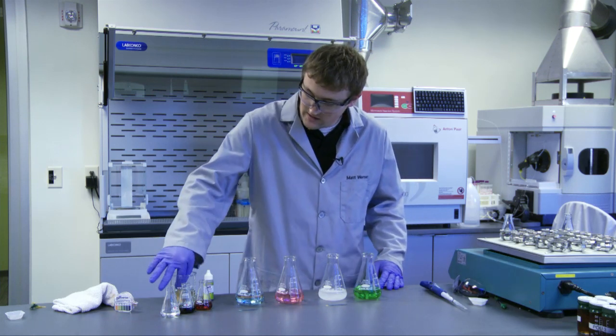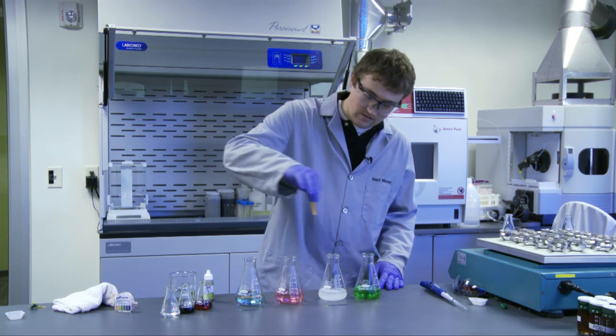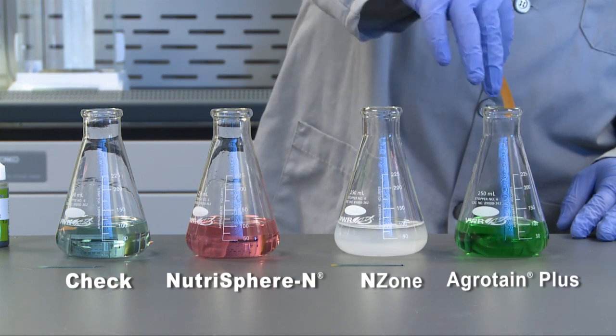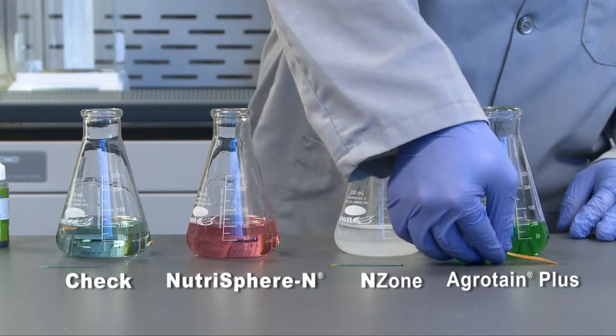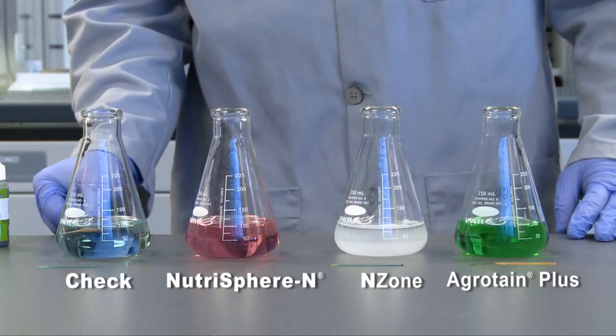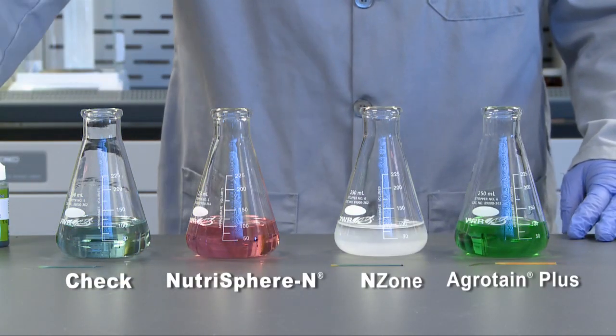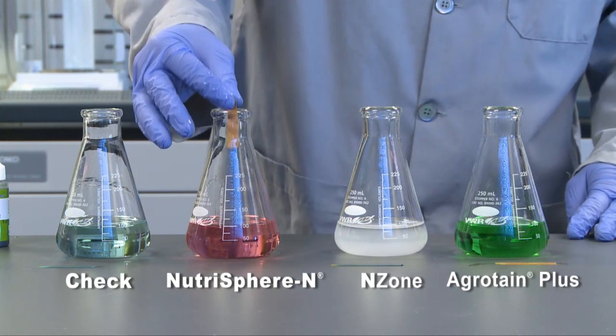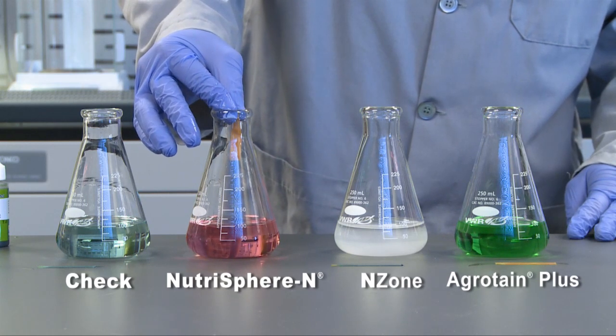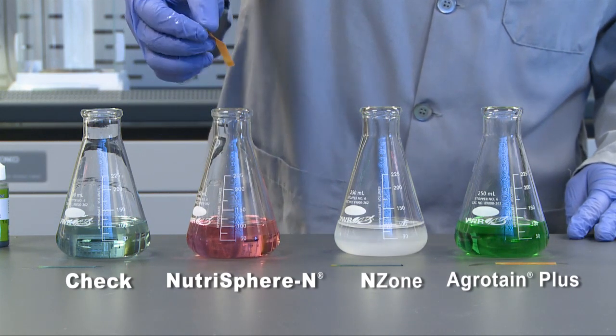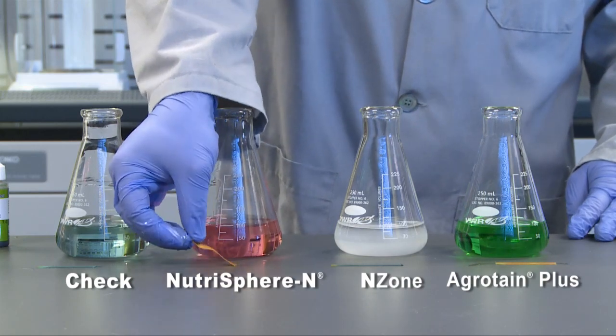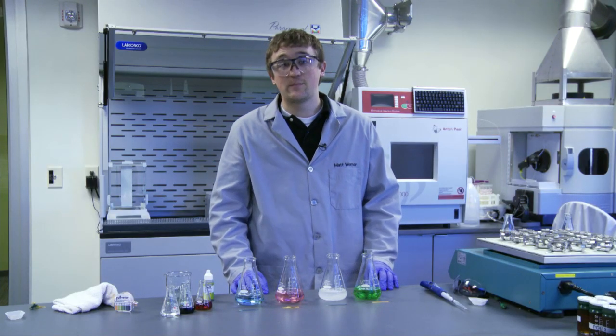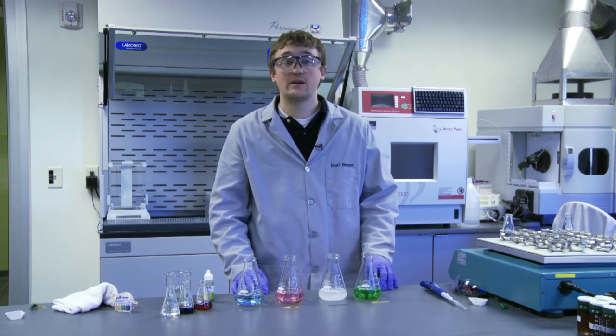And then for agrotain, it did not change color. And then just to follow up with another strip, our NutraSphere N container has no volatilization. And that's after 24 hours. So, we've stabilized that nitrogen and kept it in the urea form by inhibiting the urease enzyme.